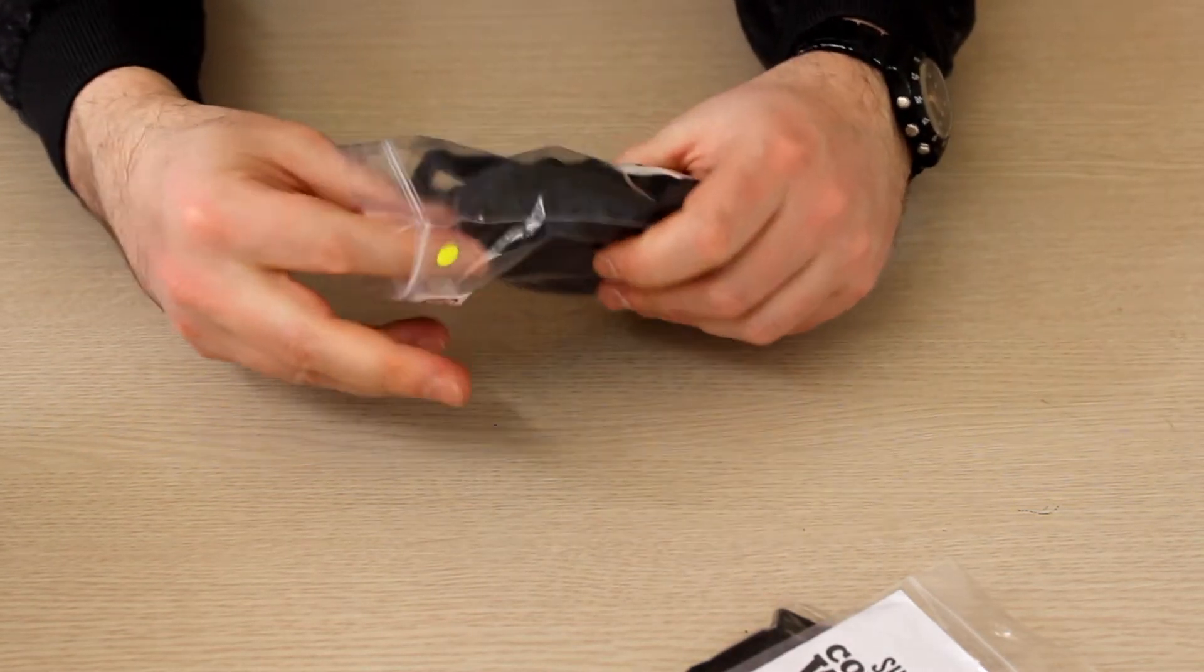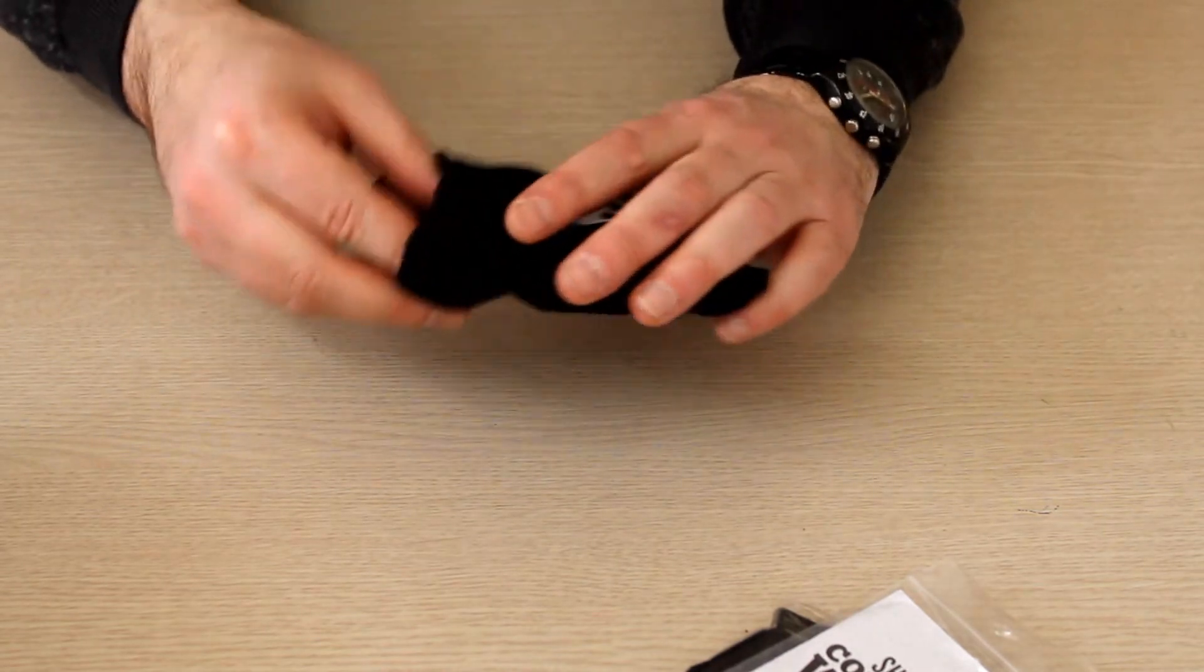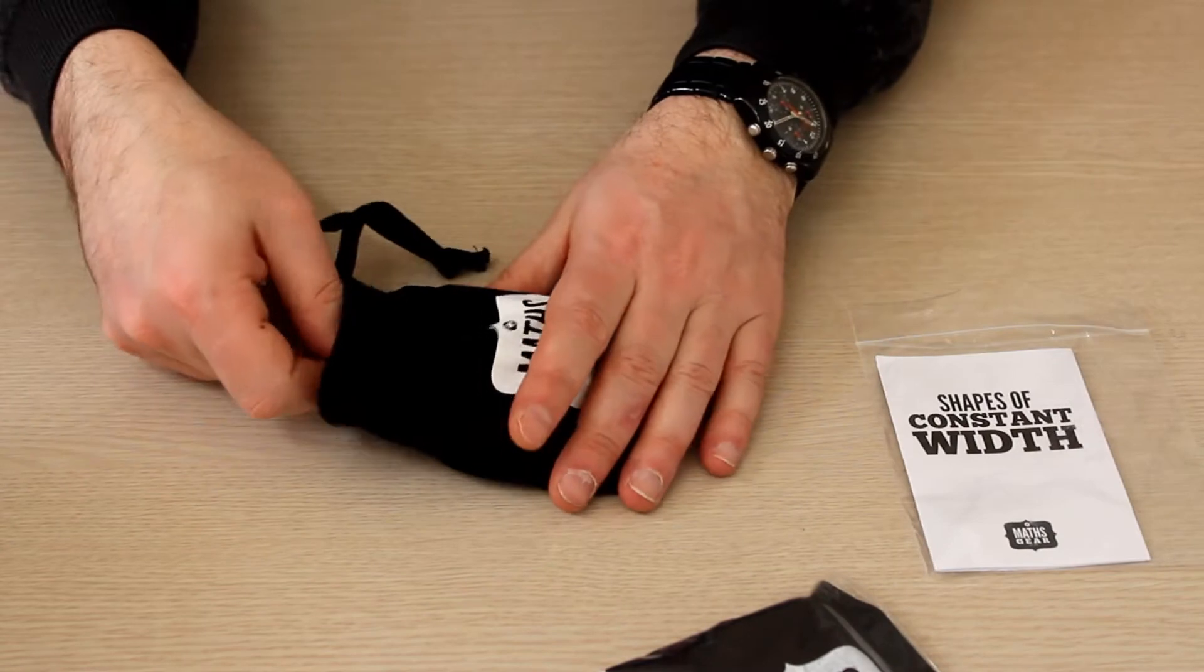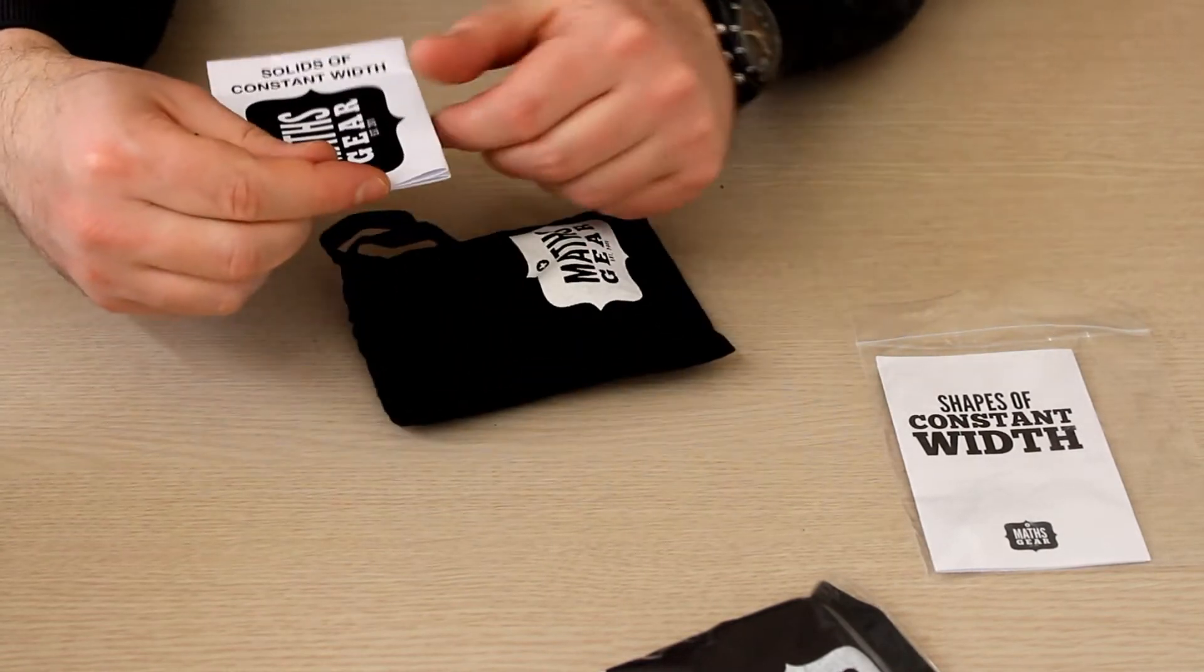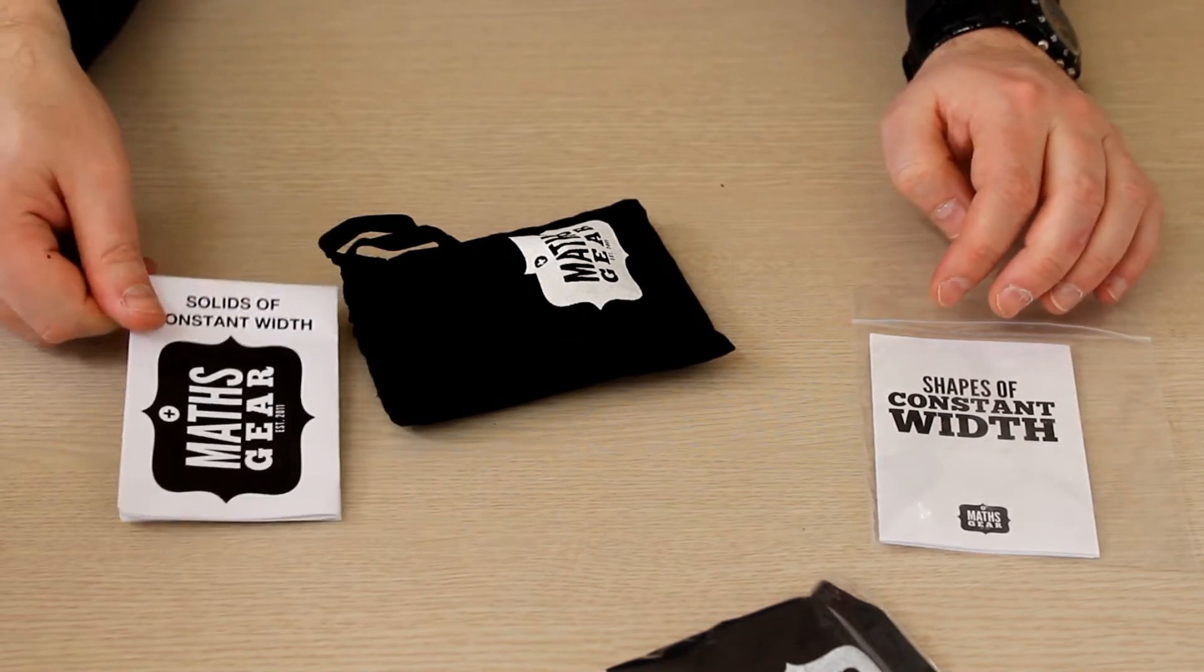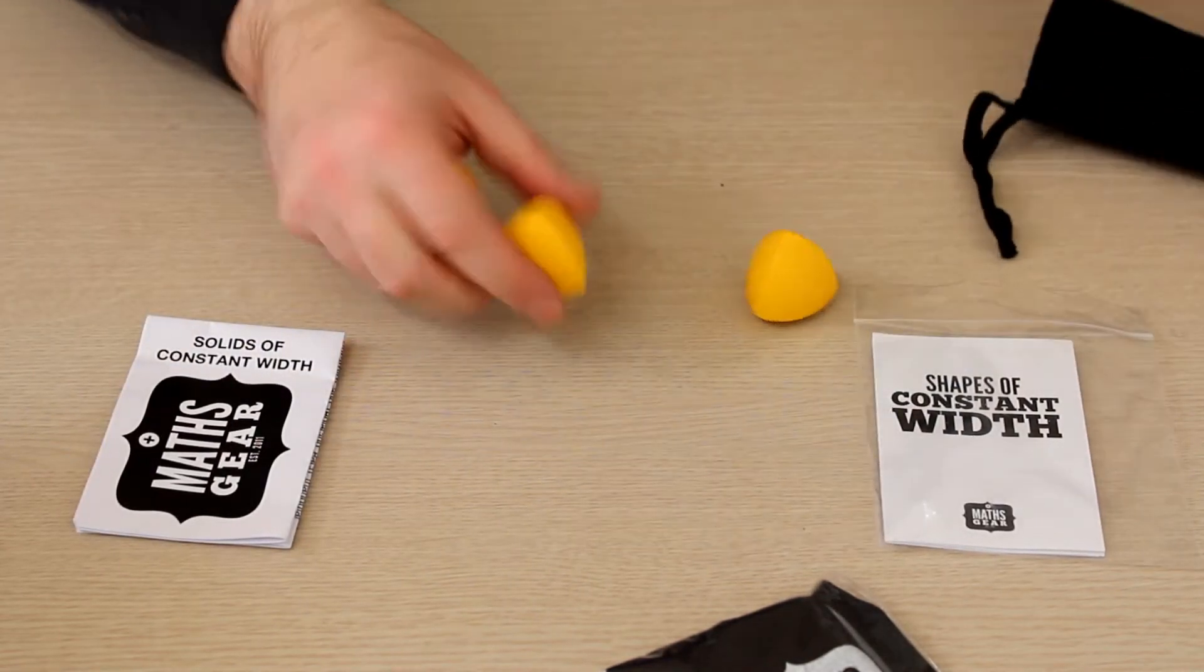I guess this is it. Nice little pouch. We have here the solids of constant shapes. And we have the shapes of constant shapes, and here we have the solids of constant shapes. And here they are.